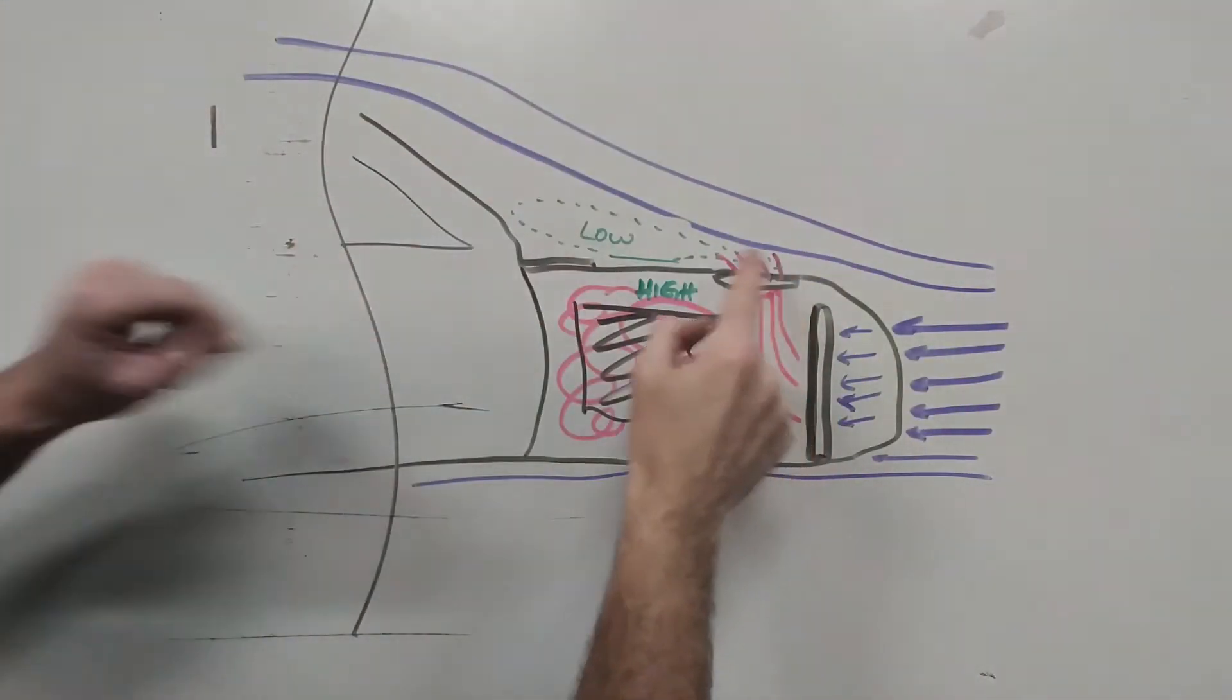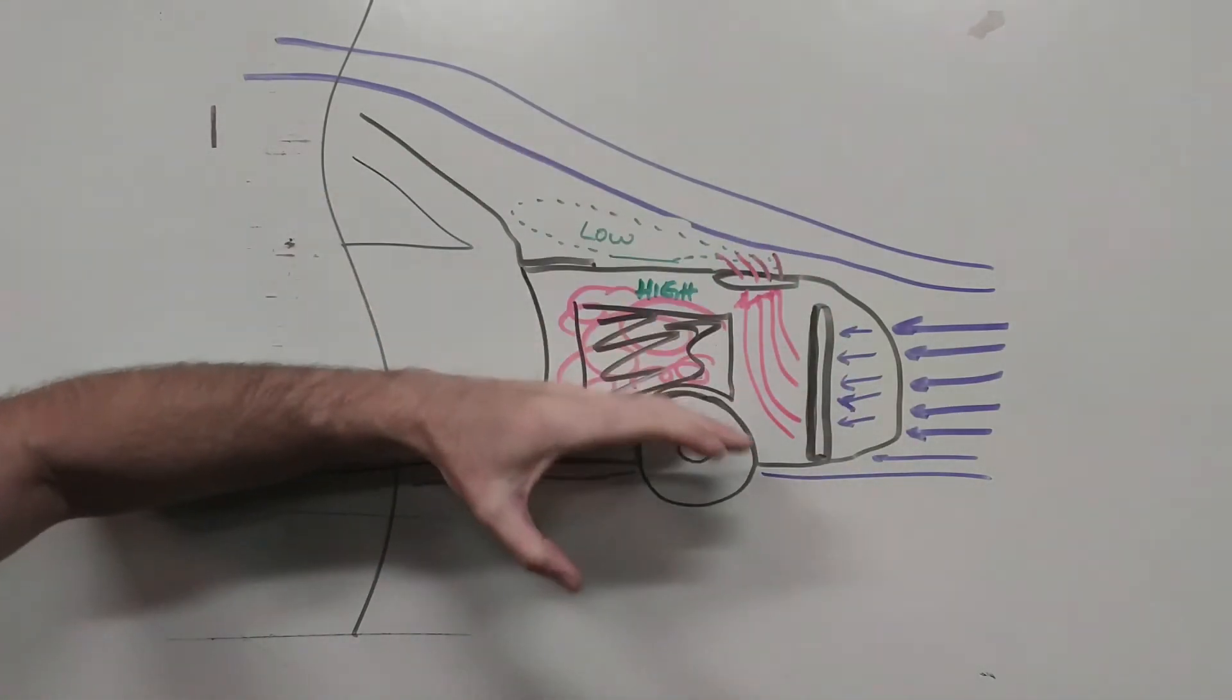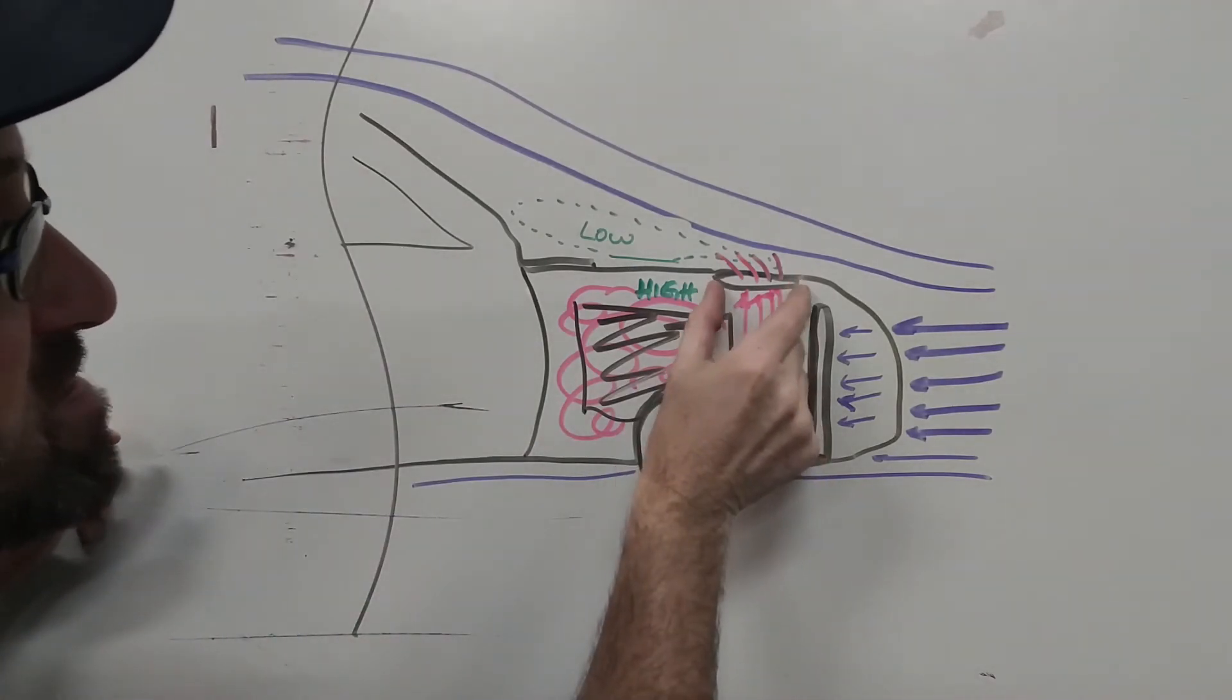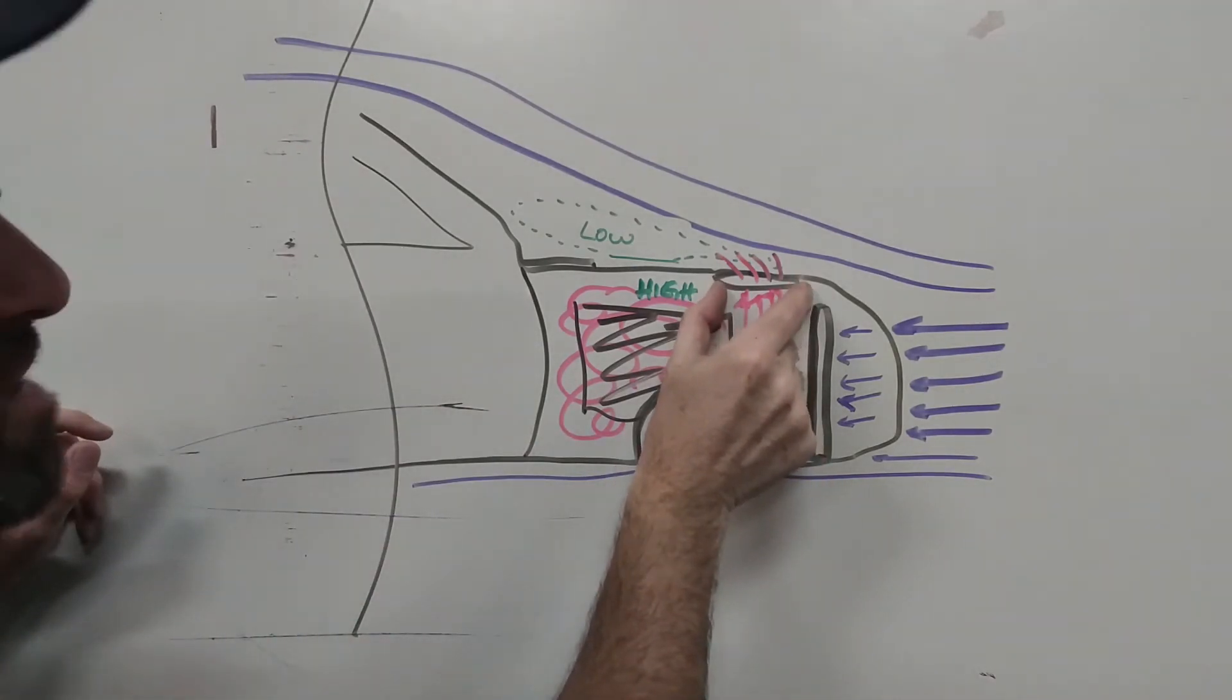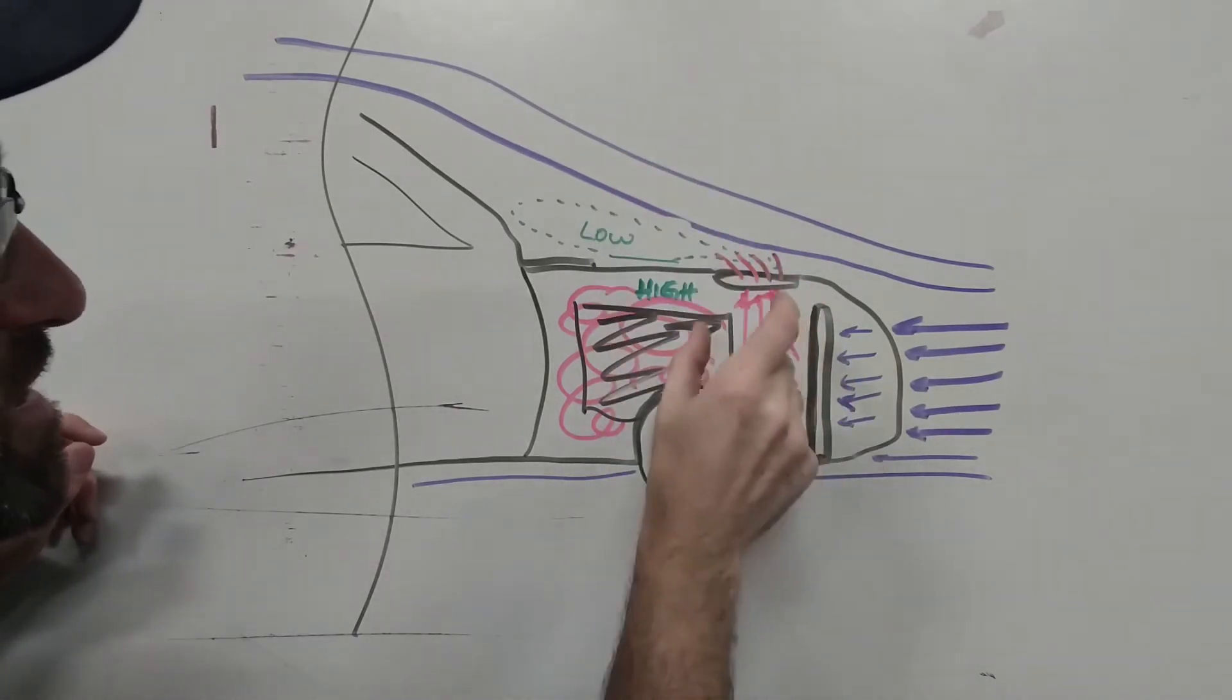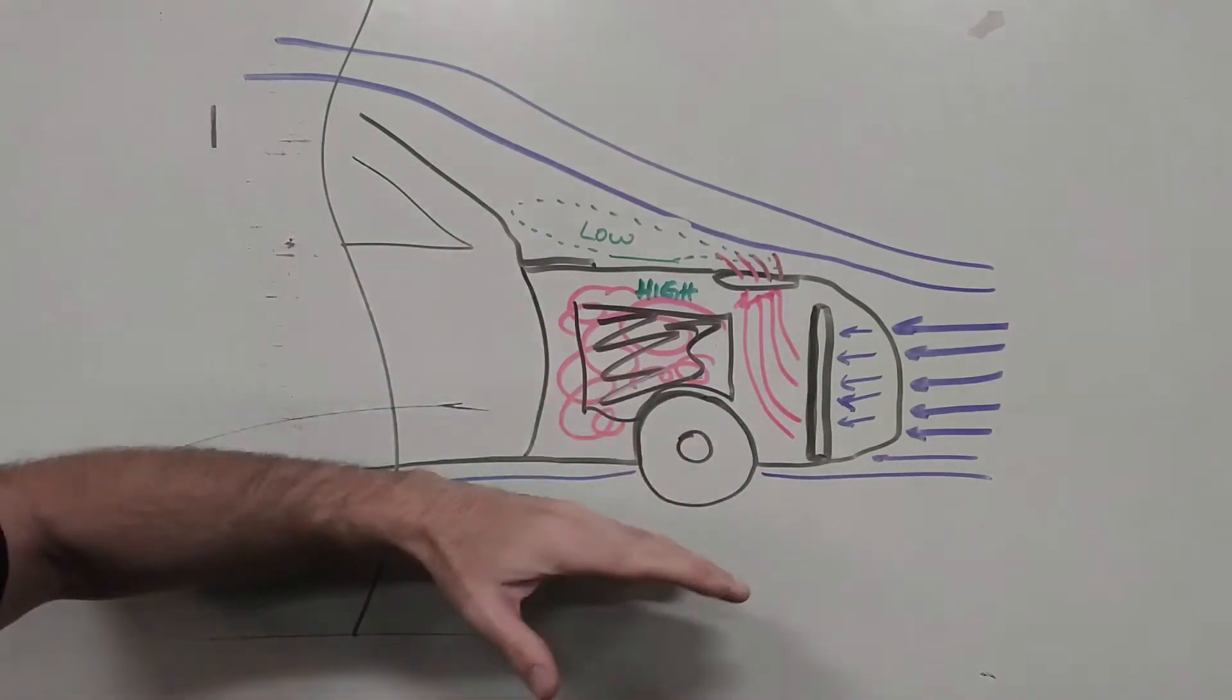So by adding an exit point here, this vehicle now stays more planted down to the ground. What you'll find is the best hood louvers on the market actually will help draw out this air and turn this into a downforce going down.